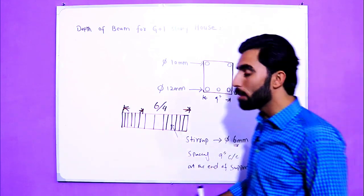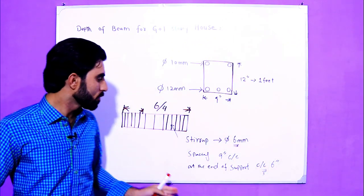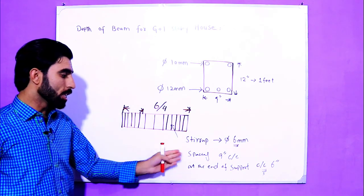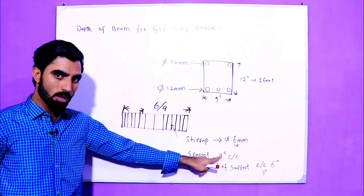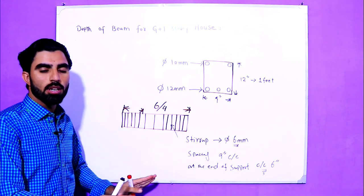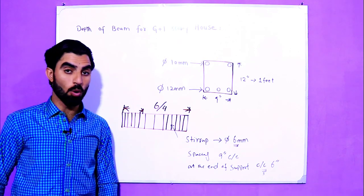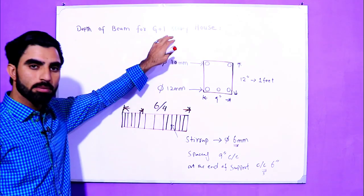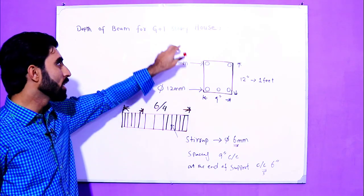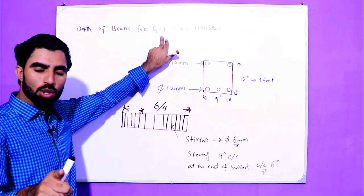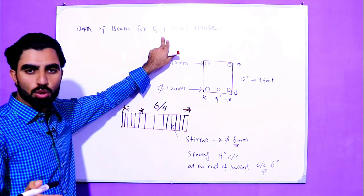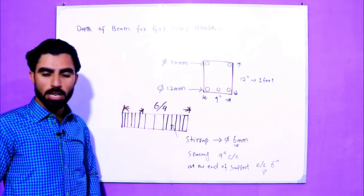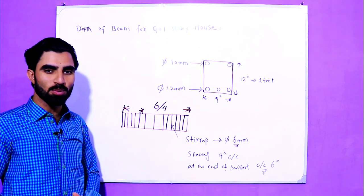So this is the design for a plinth beam for a G plus one story house — covering its width, depth, and steel structure. The diameter of the stirrups should be 6 mm with spacing of 9 inches, reduced to 6 inches at the end of the supports. I hope your house structure will be safe if you use this, but only for G plus one story, not for third or fourth story. If you have any questions, please comment and I will try to reply. Thanks for watching, see you in the next video, goodbye.